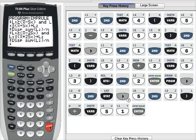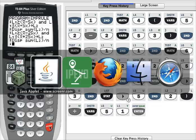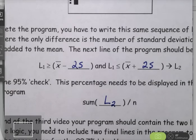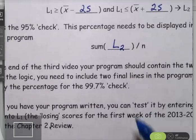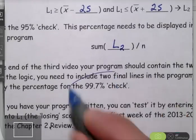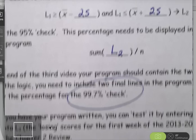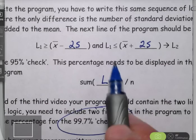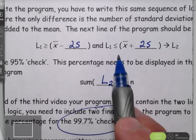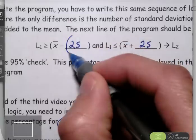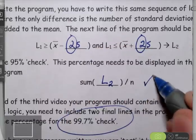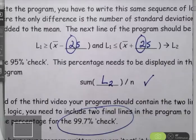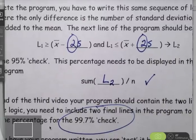So the last thing that you need to do then, your job then is to write in two more lines into the program to check for the 99.7% portion of the rule. So it's going to look very much like this line of the program except your twos are of course going to be replaced with threes. You still need to display the sum.